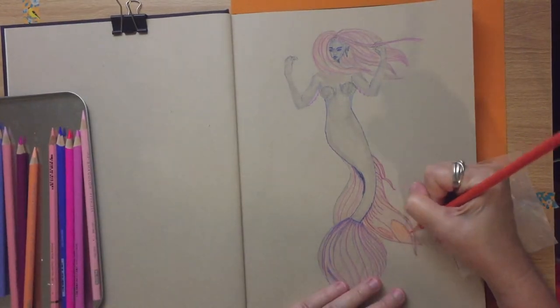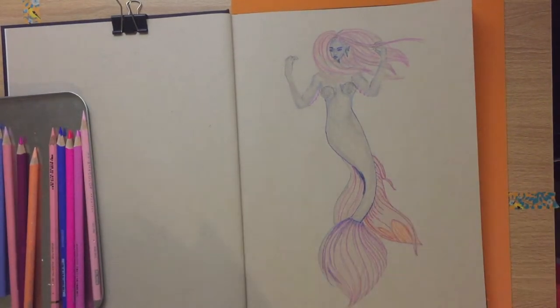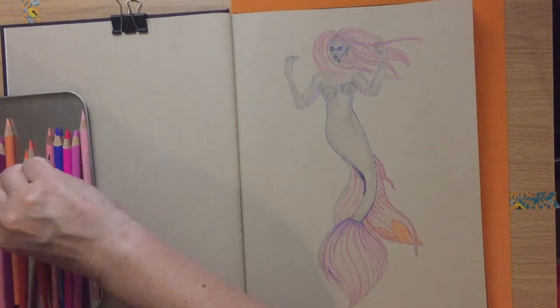So I just sort of went back and forth between her hair and her fins the whole time to get them. I mean, they don't match exactly, but to get them so that they were harmonious. I think her hair has way more orange in it than the fins do and less blue. But yeah, I wanted them to look like they went together. And I really like orange as an accent color.